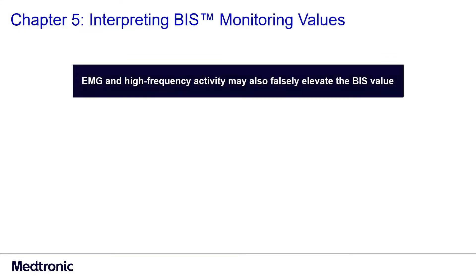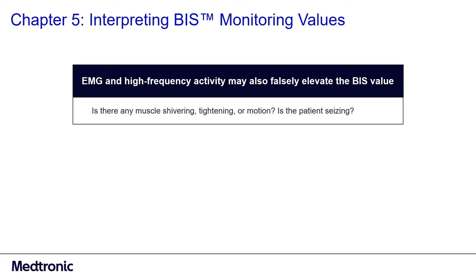EMG and high-frequency activity may also falsely elevate the BIS value. Some questions to ask if you suspect high-frequency activity: Is there any muscle shivering, tightening, or motion?